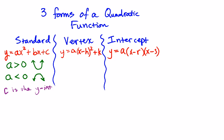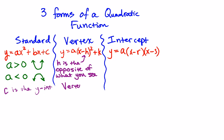The best form to show what's taking place in regards to shifting is vertex form. The h and k deal with shifting: h deals with horizontal shifts, moving the graph left and right, and k moves the graph up and down. One thing to remember is that h is the opposite of what you see. And k is whatever you see being added or subtracted at the end. The vertex can be found easily by looking at the form — it's simply (h, k).